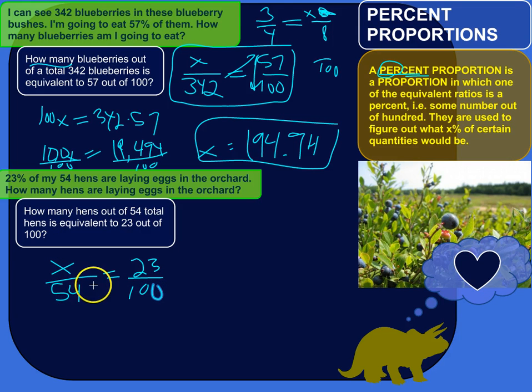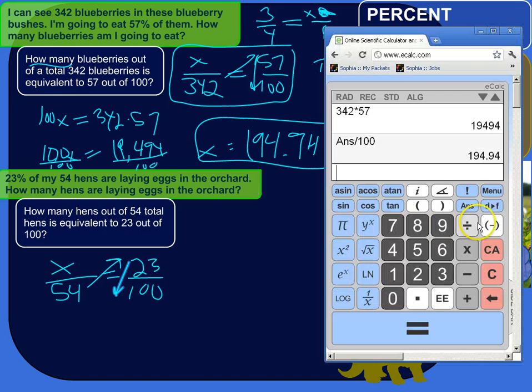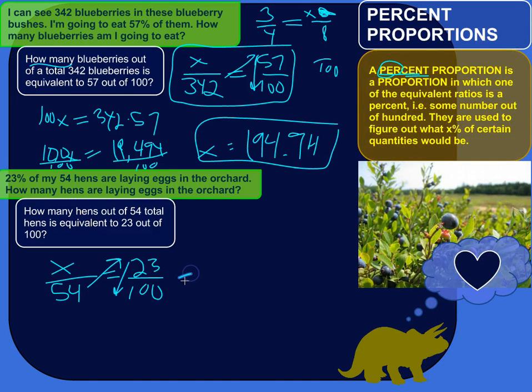So how many hens out of 54 total hens is equivalent to 23 out of 100. So let's do the slightly quicker way where you just kind of roll a few steps into one. You multiply, cross multiply, so you do 54 times 23, and then divide by 100. So let's do that there. 54 times 23 divided by 100. 12.42, x equals 12.42 hens.